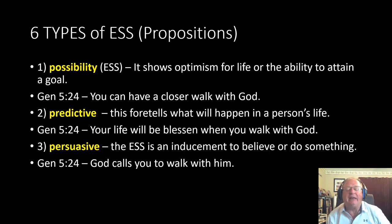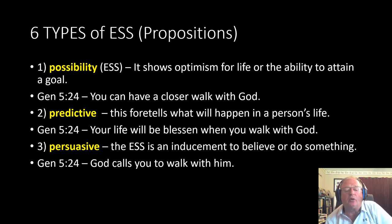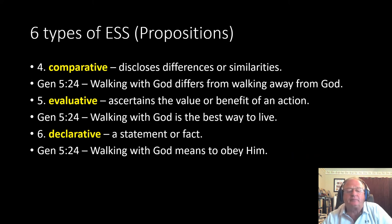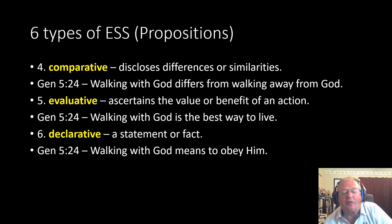There are six types of ESS or propositions. First, a possibility — it shows optimism for life or the ability to attain a goal. For Genesis 5:24: 'You can have a closer walk with God.' Second, predictive — it foretells what will happen in a person's life. Genesis 5:24: 'Your life will be blessed when you walk with God.' Third, persuasive — an inducement to believe or do something. Genesis 5:24: 'God calls you to walk with Him.' Fourth, comparative — it discloses similarities or differences: 'Walking with God differs from walking away from God.' Fifth, evaluative — ascertains the value or benefit of an action: 'Walking with God is the best way to live.' And sixth, declarative — a statement of fact: 'Walking with God means to obey Him.'